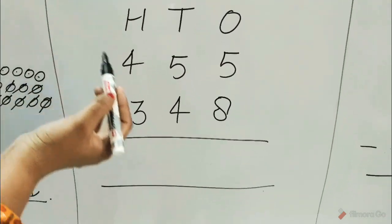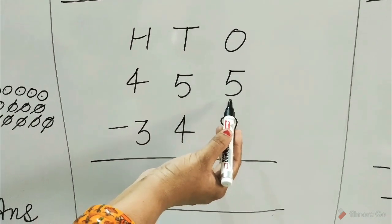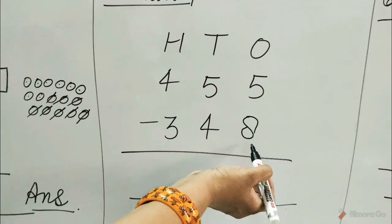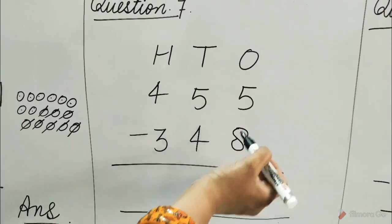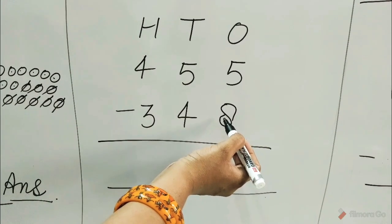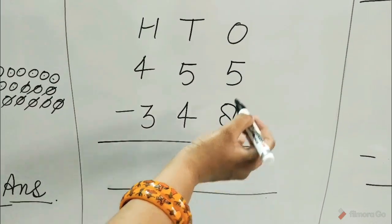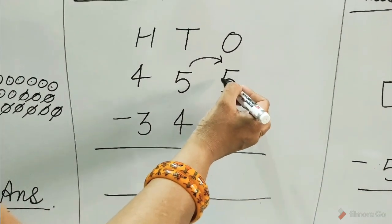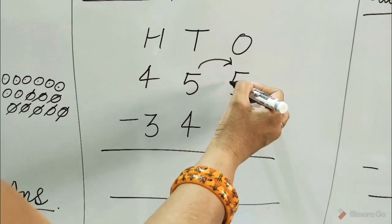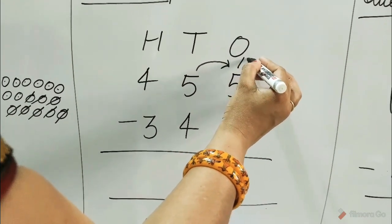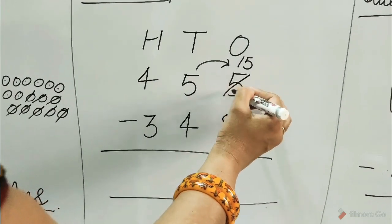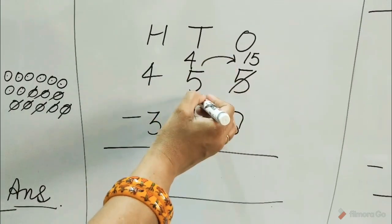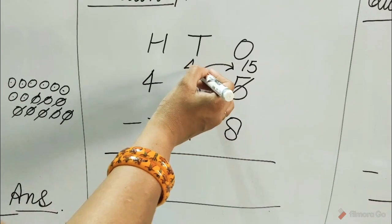Question number 7: 455 minus 348. Look at the ones column. 8 is bigger than 5 so it cannot be subtracted. Regroup the ones column. Borrow 1 ten from the tens column and add it to the 5 ones. 1 ten plus 5 ones is equal to 15 ones. Cut the 5 and write 15. 4 tens are left in the tens column. Cut the 5 and write 4.